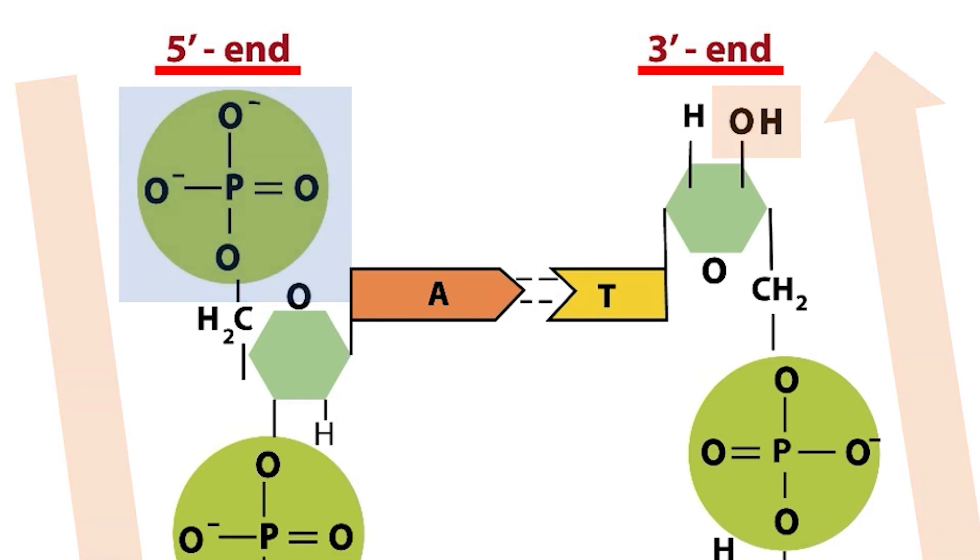These names refer to the position within the ribose that each group is connected to. The hydroxyl group is connected to the third carbon in the ribose sugar. The phosphate group is connected to the fifth carbon in the ribose sugar. You can remember the difference between these two ends because hydroxyl groups are at the 3' end and are much smaller than the phosphate groups at the 5' end, and 3 is smaller than 5.